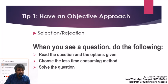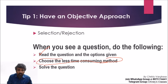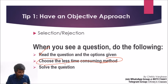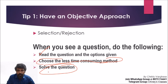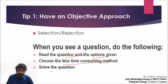When you see a question, follow three steps. First, read the question and the options given — reading the options is very important because the options tell you what the least time-consuming method is. Second, choose the least time-consuming method — many people miss this and just use the only method they know. Third, only then solve the question.